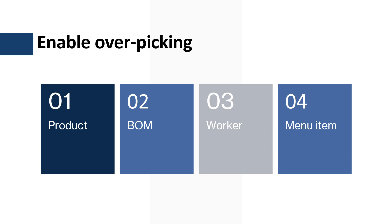The over-picking threshold is defined at the product level as a certain percentage, but it can be overridden at the BOM line level. The over-picking option can also be enabled at the warehouse worker level and the mobile device menu item level.